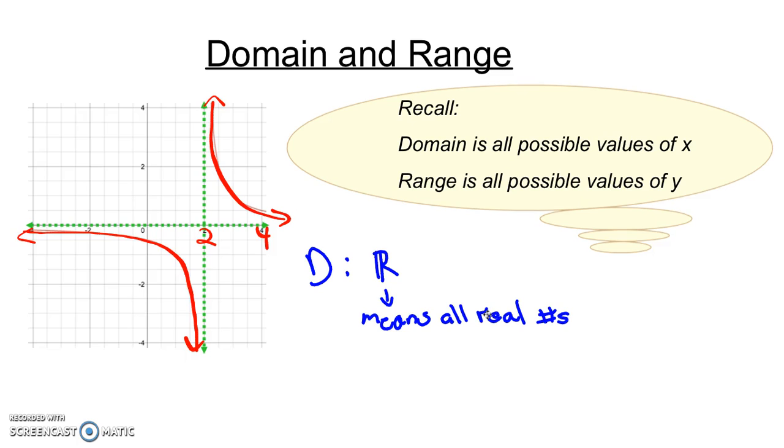There is, however, one real number in the case of this graph that is not included in the domain. Can you tell what it is? Well, we have an asymptote at x equals 2. And that's because our graph approaches but never touches the value x equals 2, which means that is excluded, not equal to 2 for our domain. So all real numbers except 2 is our domain.